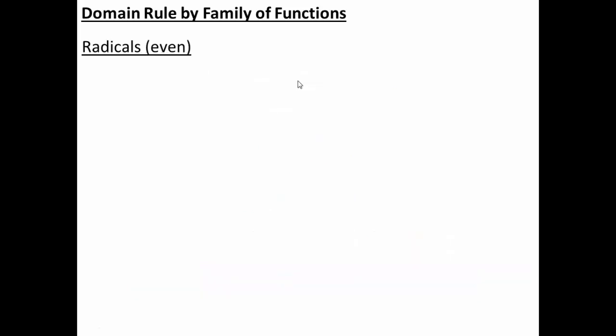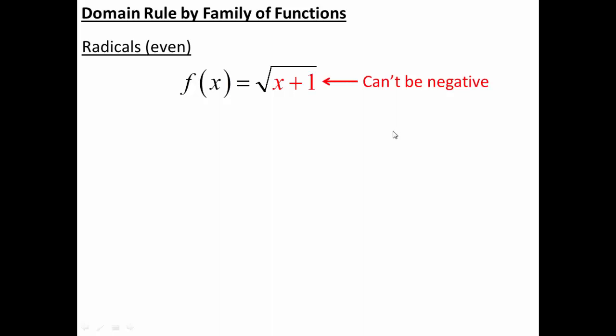Our next set of functions are radical functions. Radicals have different rules depending on whether it's an even radical versus an odd radical. An even radical would be like a square root — a second degree root. With even radicals, the rule is that the inside can't be negative, because if the inside were negative, we'd be taking the square root of a negative number, which is imaginary and not allowed. So we extract that inside — in this case x plus 1 — and since it can't be negative, it has to be positive or zero, meaning x plus 1 must be greater than or equal to zero.